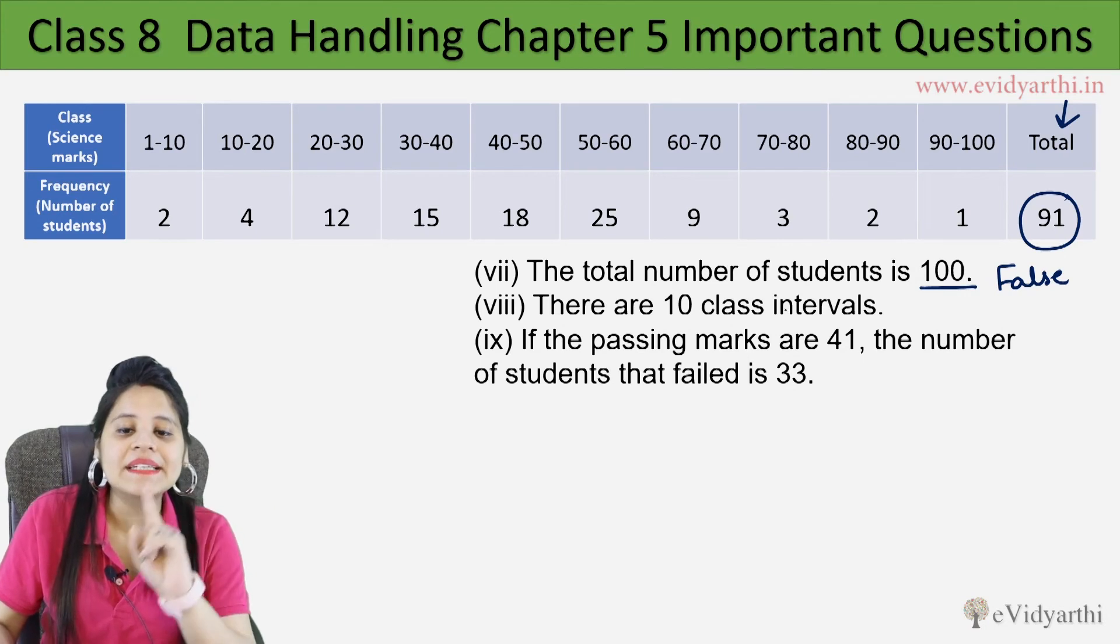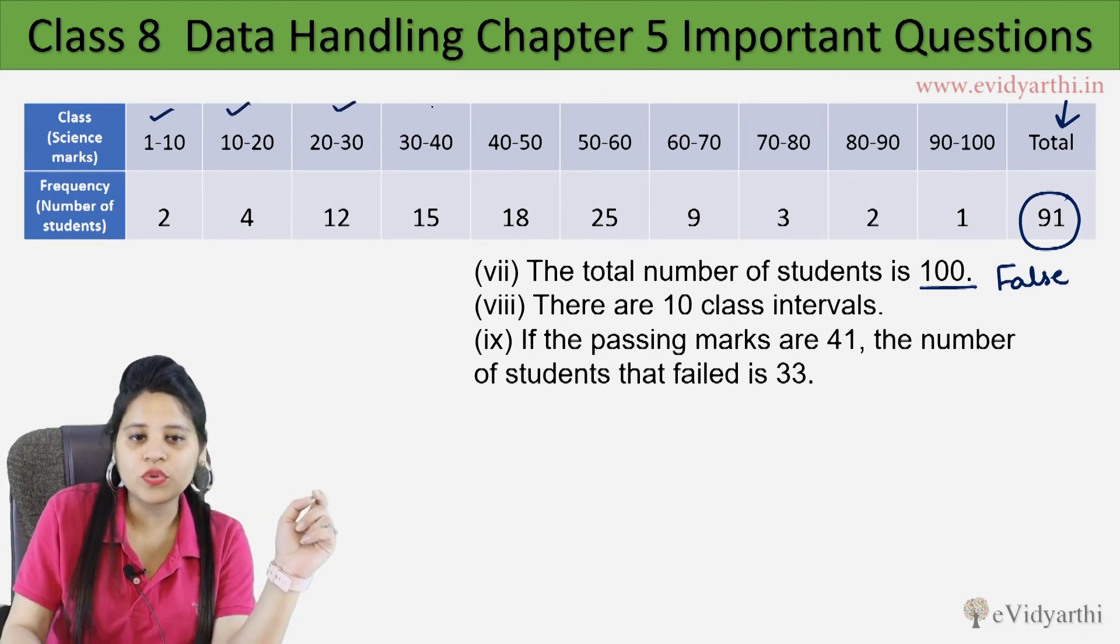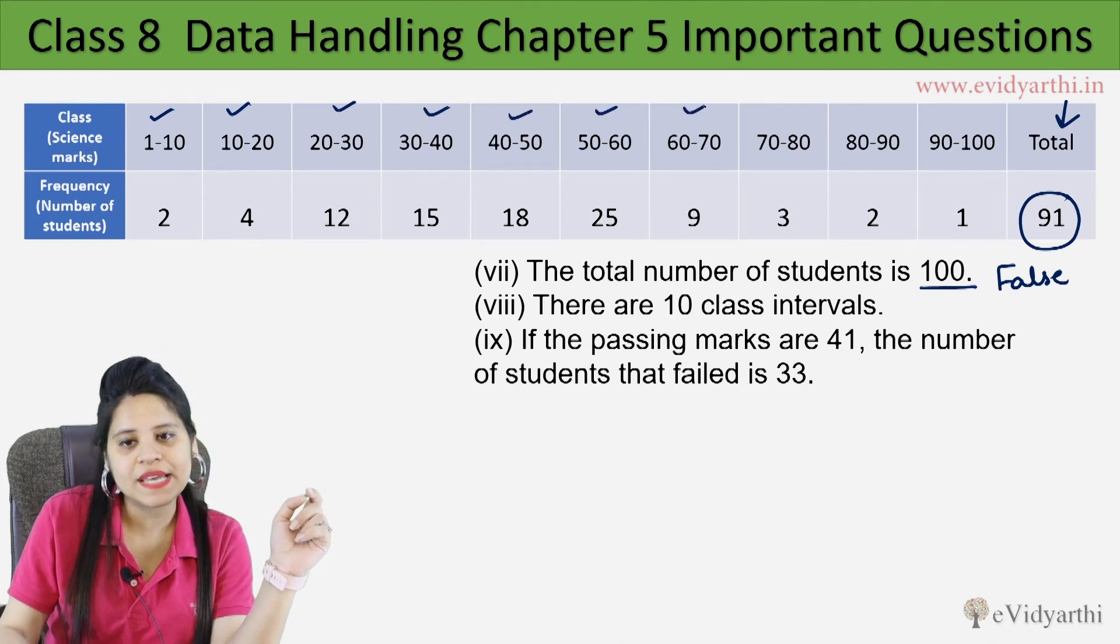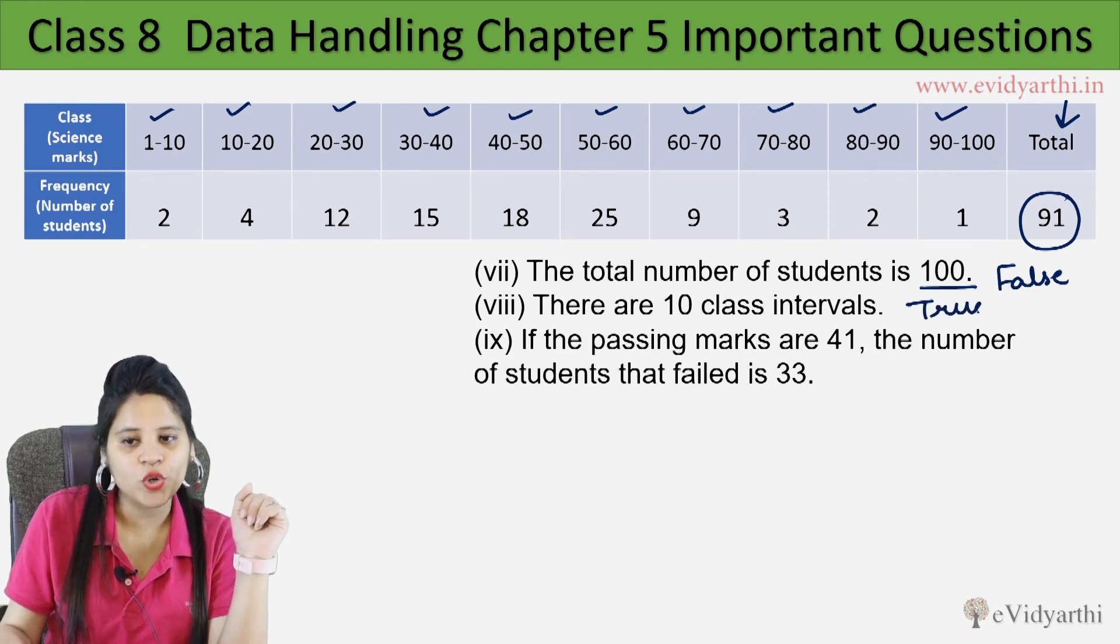Next there are 10 class intervals. So how many class intervals are? 1, 2, 3, 4, 5, 6, 7, 8, 9 and 10. So 10 class intervals are. So this is true.